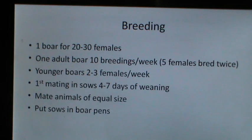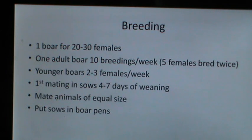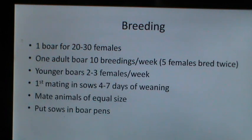As far as breeding is concerned, one boar is sufficient for 20 to 30 females. One adult boar may give 10 breedings per week — 5 females bred twice. Younger boars may serve 2 to 3 females per week. First mating in adult sows can occur within 4 to 7 days of weaning, so weaning appears to be important for the lactating sow. It is important to mate animals of equal size and put sows in boar pens.